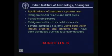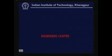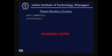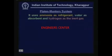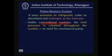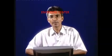There are several pumpless systems using both water lithium bromide and ammonia water, and people have been working on these for many decades. The most popular one is the Platen-Munters system, also known as the triple fluid vapor absorption refrigerant system. This system uses ammonia as refrigerant, water as absorbent, and a third fluid - hydrogen - as the inert gas, which is why it is called a triple fluid system. Unlike conventional systems, the total pressure is constant throughout, so no compressor, pump, or expansion valve is required.